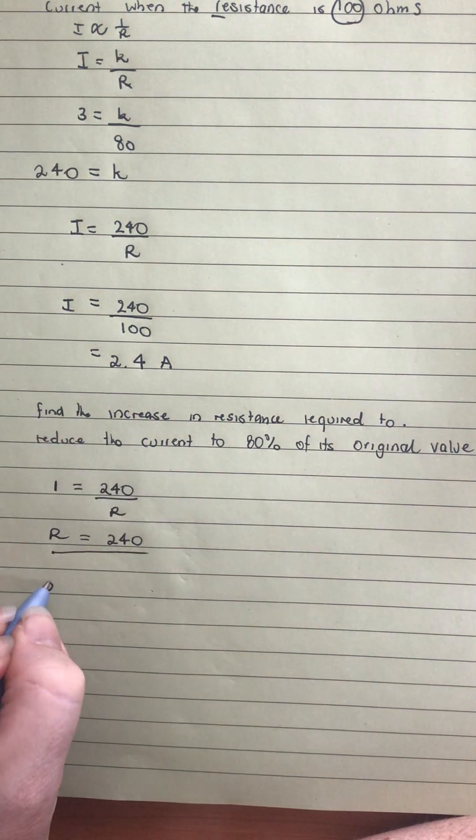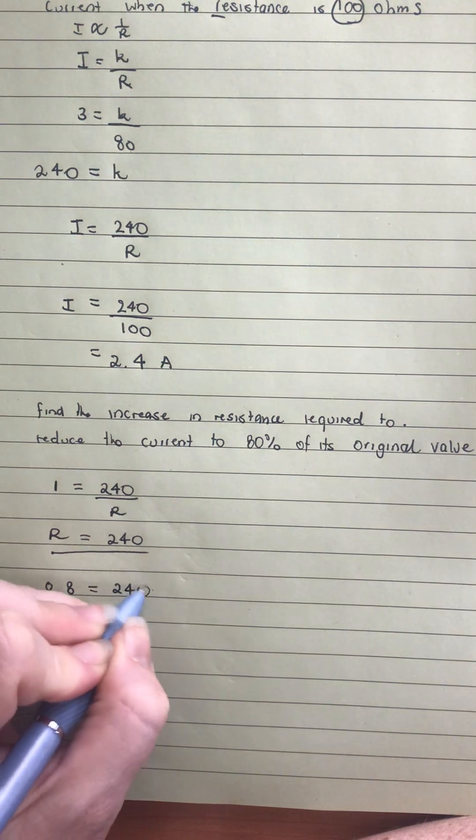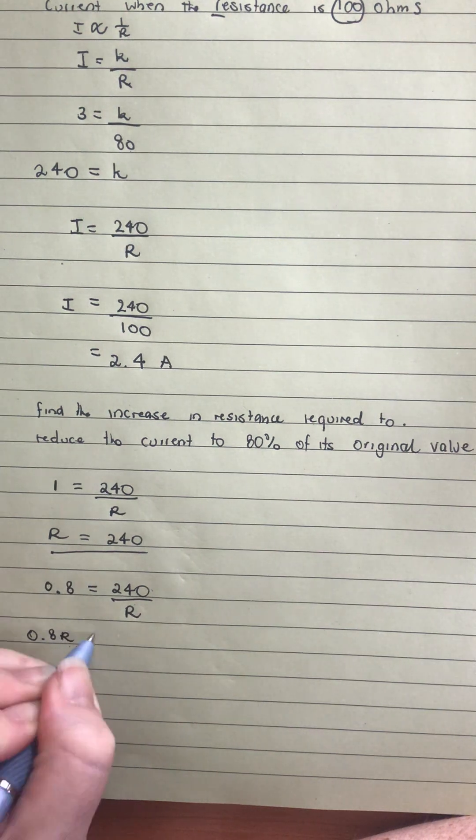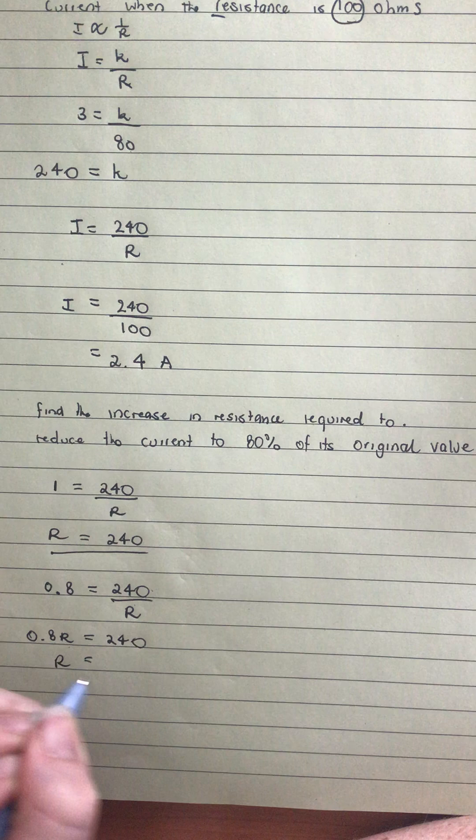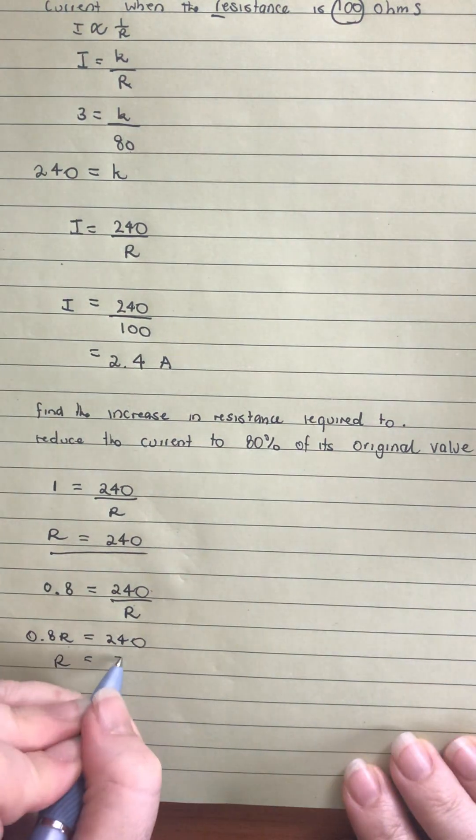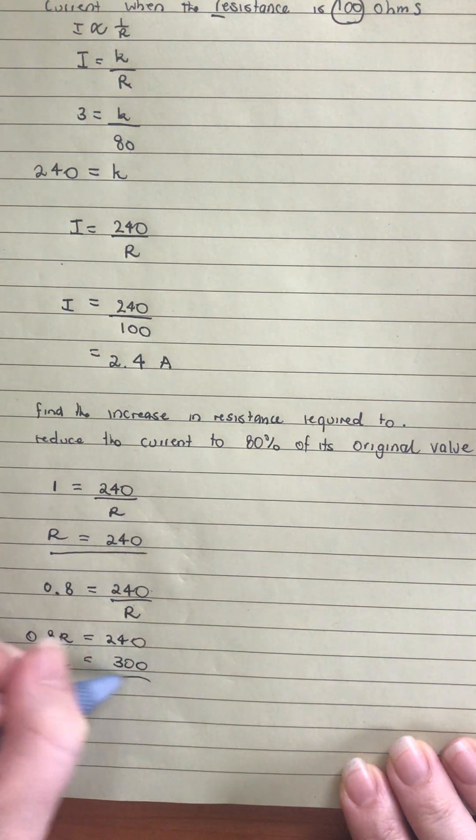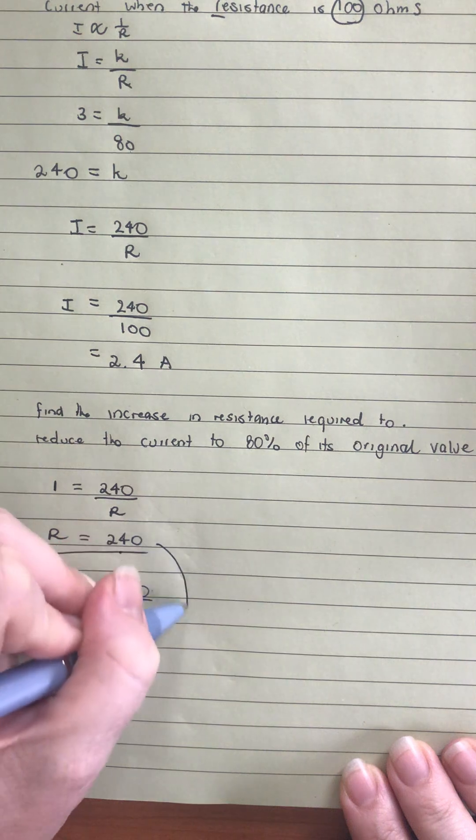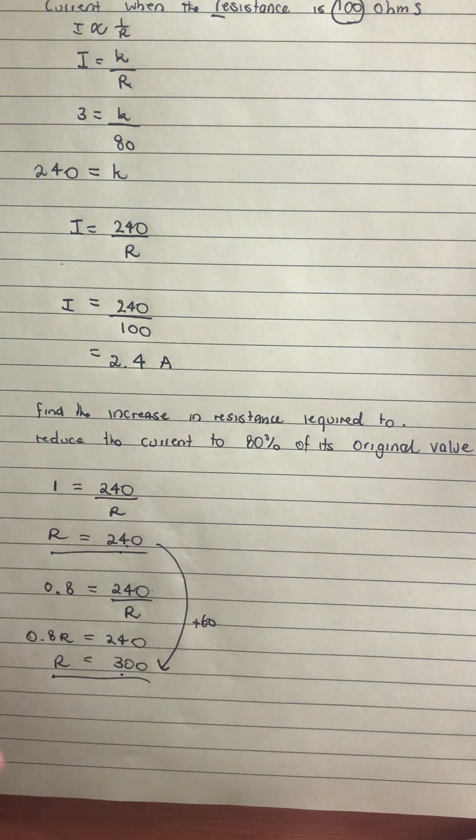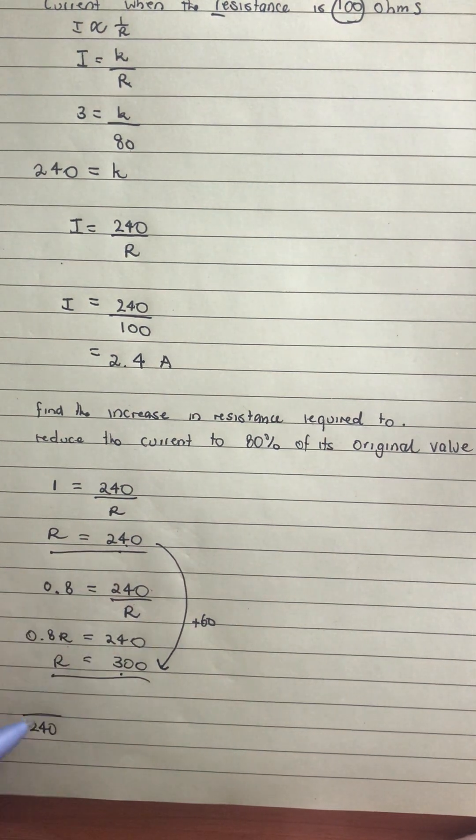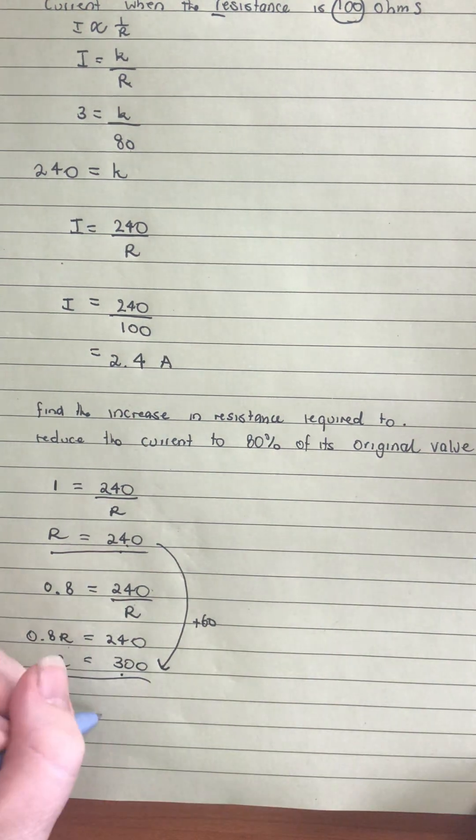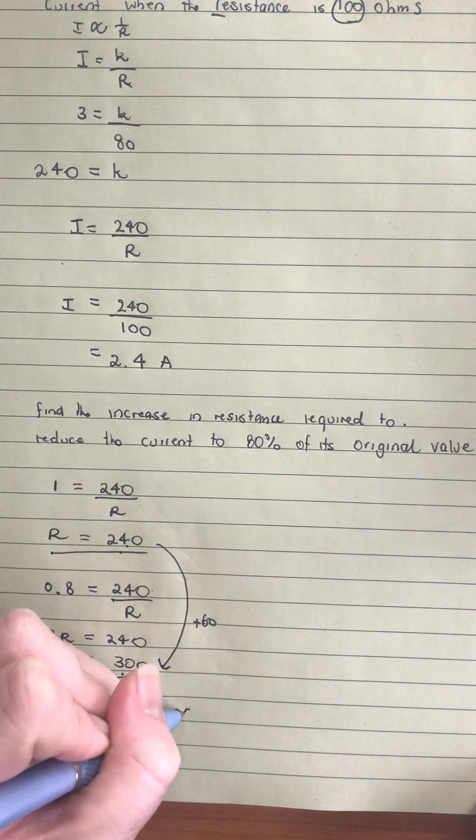Then we bring our r over, so our r must be equal to 240. If we then, instead, put 0.8, then our resistance would be, r is equal to 240 divided by 0.8, and I get 300. My resistance has gone from 240 to 300. That is an increase of 60. But we want to know that as a percentage. If it started as 240, and it's gone up 60, then that percentage is going to be our 60 divided by 240, which is 0.25, which we would change to 25%.